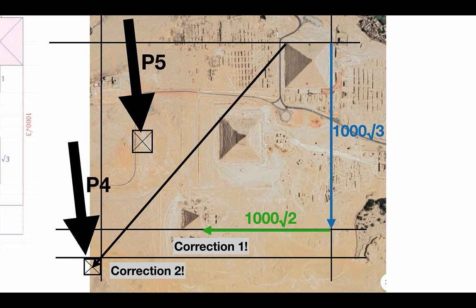Now notice this one. In the last video I gave the distance shown here in green as a thousand times root two — this is correction one. That line actually goes to the southwest corner of Menkaure, not the southeast. That's the thousand times root two. And then something Ian pointed out: if you take the hypotenuse from the northeast of Khufu to the southwest of Menkaure, it's a thousand times root five.